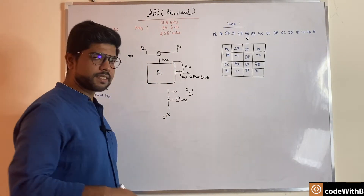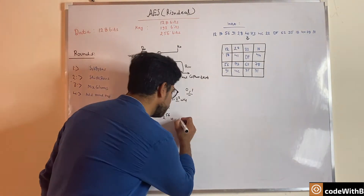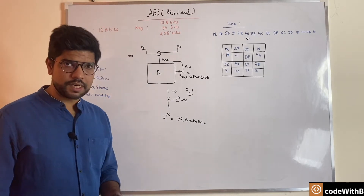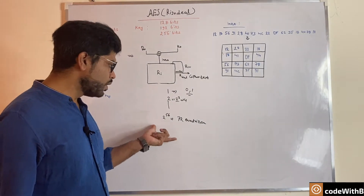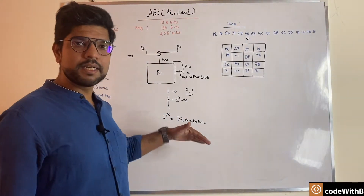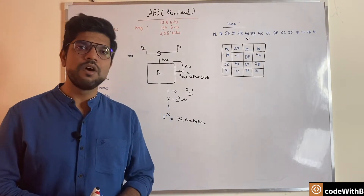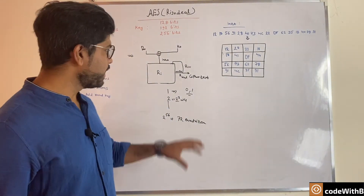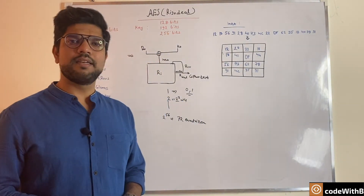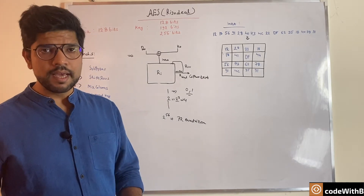2^56 is a very huge number, somewhere around 72 quadrillion. When DES came into picture it was considered impossible to decrypt data using a brute force attack. But in 1998, the Electronic Frontier Foundation was able to identify the key using brute force in just 22 hours, so a new algorithm was needed to keep data secure.